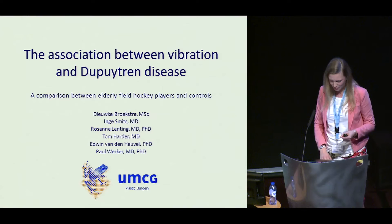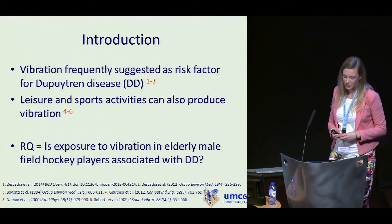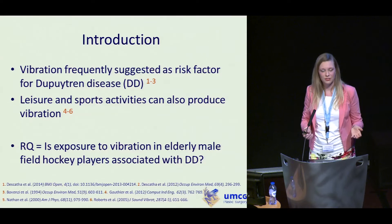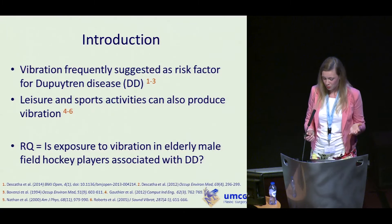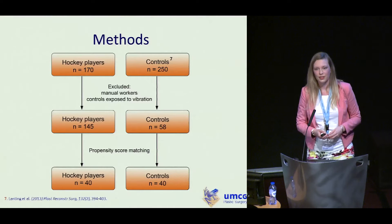We looked at the association between vibration and Dupuytren's disease in this population. We have the same conflicts of interest to declare. Vibration is frequently suggested as a risk factor for Dupuytren's disease, and in all these papers the focus is mainly on occupational exposure. That's strange, because during leisure and sports activities the hands can also be exposed to vibration. So we asked: is exposure to vibration in elderly male field hockey players associated with DD?